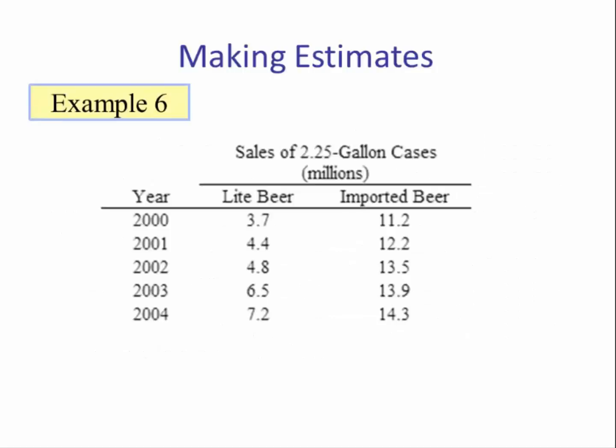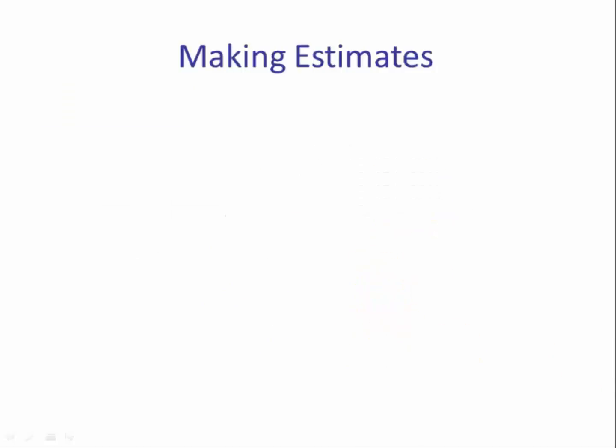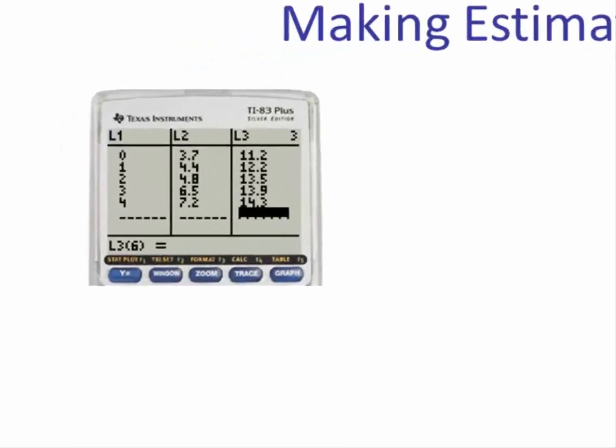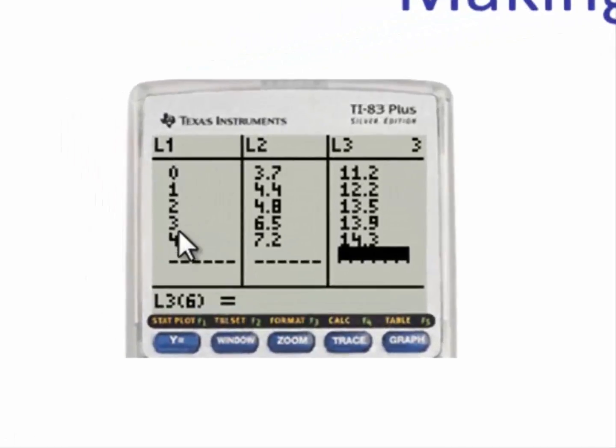So here we have our data. We want the year since 2000, so t equals 0, 1, 2, 3, and 4. Our light beer will be modeled by f(t), imported beer will be g(t). First step: we have to enter the data in List 1, 2, and 3. T will be list 1, f(t) is list 2, g(t) will be list 3.